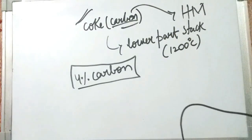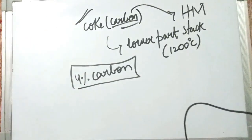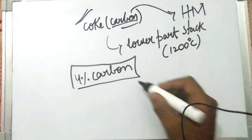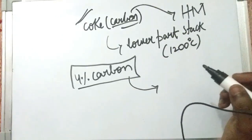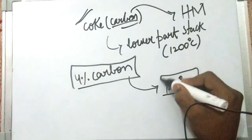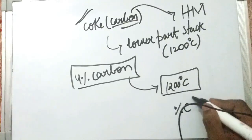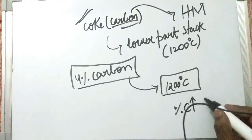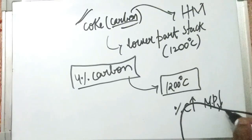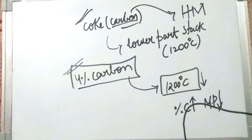The hot metal contains about 4% carbon. This is because of the presence of coke in the furnace. The temperature of the hot metal with 4% carbon is about 1200°C. Although the melting point of pure iron is 1540°C, as the percentage of carbon increases, you can see in the iron-carbon diagram that the melting point decreases. So as carbon content increases, iron making in the blast furnace can take place at lower temperatures.